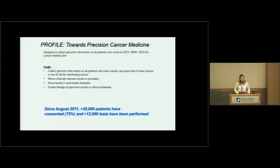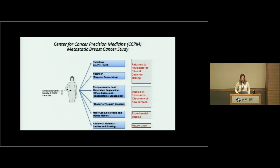One approach is called PROFILE — a Dana-Farber-wide effort toward Precision Cancer Medicine where patients can have a sample of their tumor analyzed for mutations or alterations in the cancer to help direct treatments better. Since August 2011, more than 30,000 patients across the Institute have consented to the study. Related to that, there's a Center for Cancer Precision Medicine run by Dr. Lin and Nick Wagle, which analyzes patients' tumors through multiple methods from basic immunohistochemistry to profiling and making cell lines.